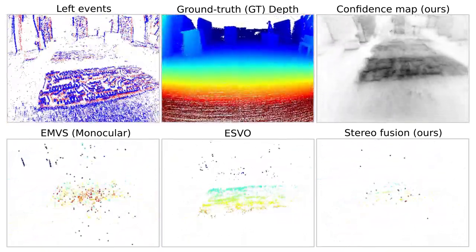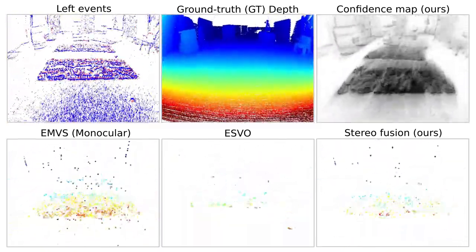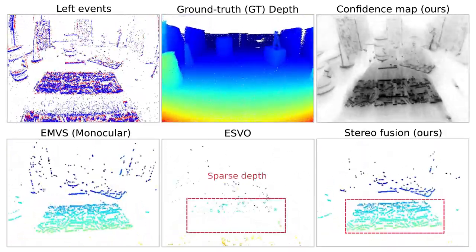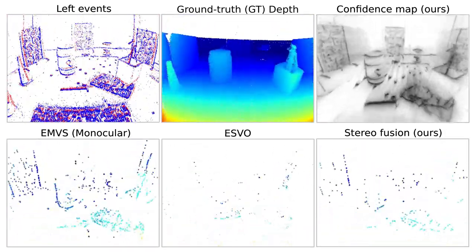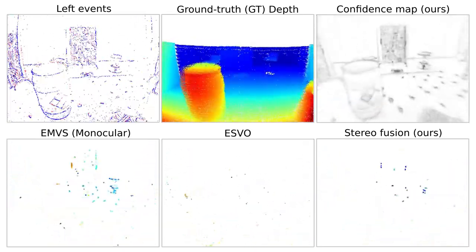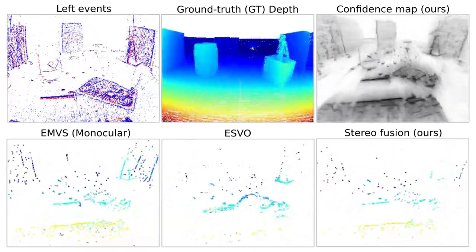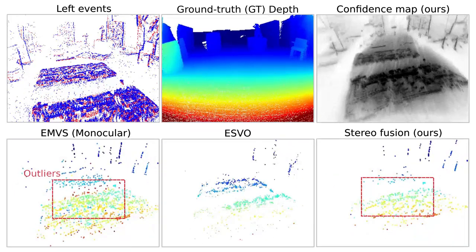Overall, our method produces the best results. Early fusion helps us discard depth outliers present in monocular EMVS.